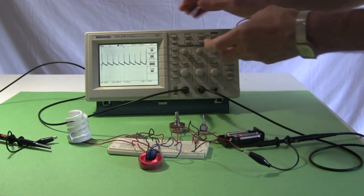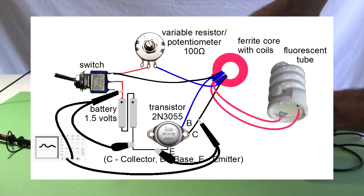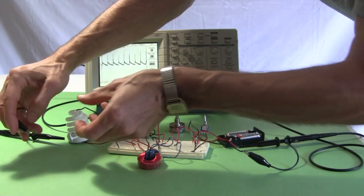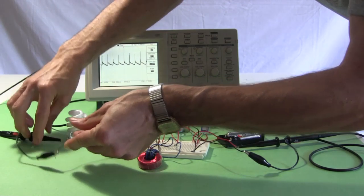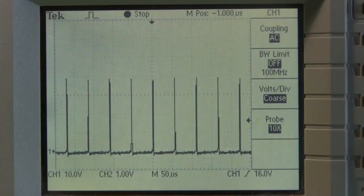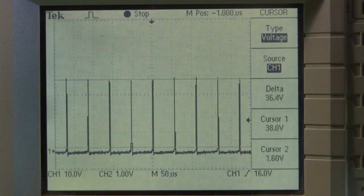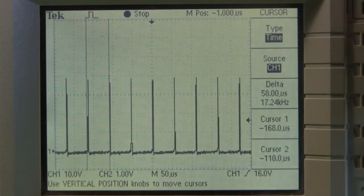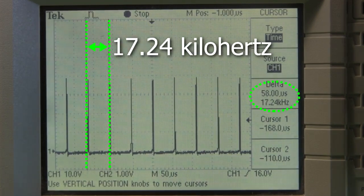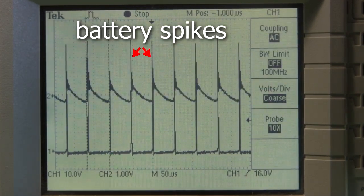Next I connect the probe to channel 1. I connect it up to measure voltage at the normal joule thief output, across the transistor's collector and the battery's negative. Notice that there are spikes here too, and switching the cursors to channel 1, that the peak voltage is around 38.8V. The frequency is around 17.24 kHz, in sync with the spikes across the battery.